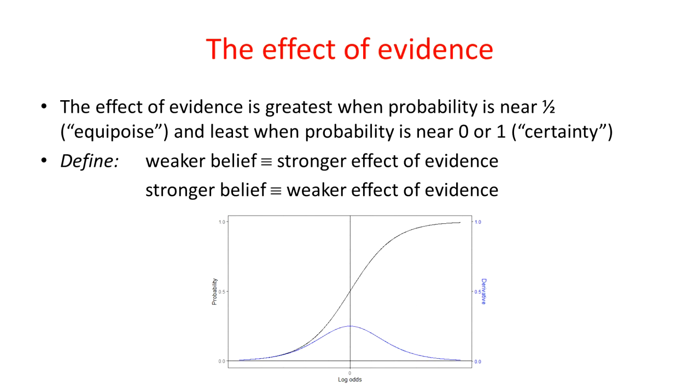So that's intuitive, isn't it? When your belief is neutral, that's at one-half, that's when evidence has the greatest effect on your belief. If you're certain about things, with a belief at zero or one, then that's where the evidence has the least effect.